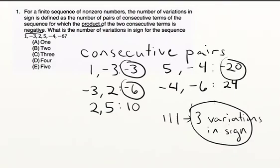So in this case, we determined that we have consecutive pairs: 1 and minus 3, minus 3 and 2, 2 and 5, 5 and 4, and so on. Each group of two consecutive numbers is a consecutive pair. And then find the product, and the variation in sign is when that product is negative.